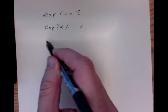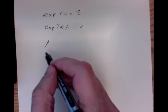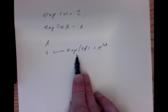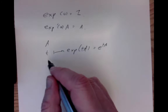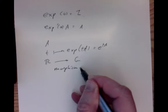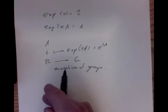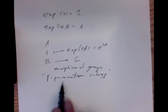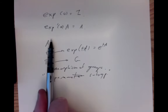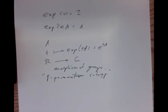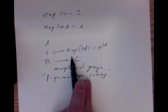If you pick any particular A and fix it, then the map t goes to the exponential of tA — which we also write as e to the tA — is actually a subgroup. It's a map from R to G, and it's actually a morphism of groups. That sort of morphism is called a one-parameter subgroup: a morphism of groups from the real numbers to the group G, given by exponentiating t times a fixed tangent vector, giving for each time t an element of G.